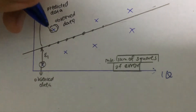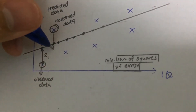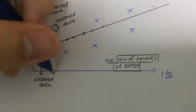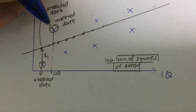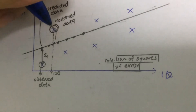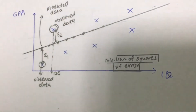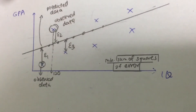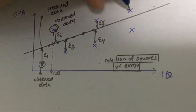We do the same thing — draw a line down from the model to the observed point. So for this particular IQ value, say 120, we calculate the vertical distance between the observed data and the predicted value, and we call this E2. We do the same for the rest of the points: E3, E4, E5.